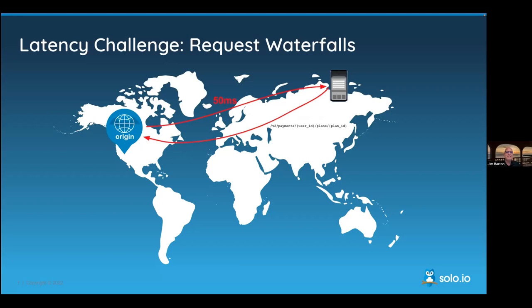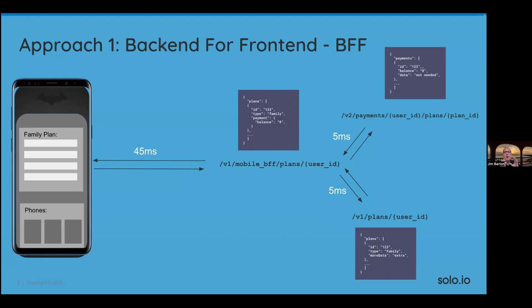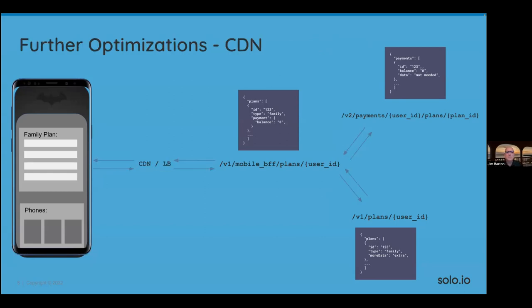We can solve some of our latency issues by using a backend-for-frontend architectural pattern. We can create an additional backend service that exposes aggregate endpoints so that the mobile app only has to make a single API call to the BFF service, which will then aggregate the responses from the individual backend services. We can also apply optimizations like CDN-level caching and load balancing to increase performance. It won't help much with HTTP POST requests, but for GET operations it could work reasonably well. It's not a complete solution for distributed multi-tenant organizations like Wayne Telecom, so we need to explore some other optimizations.